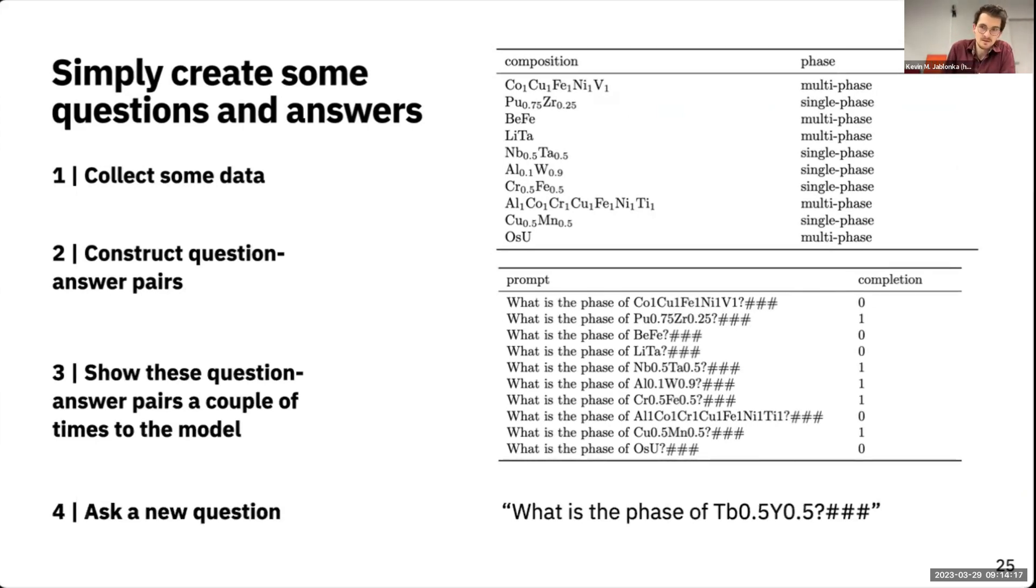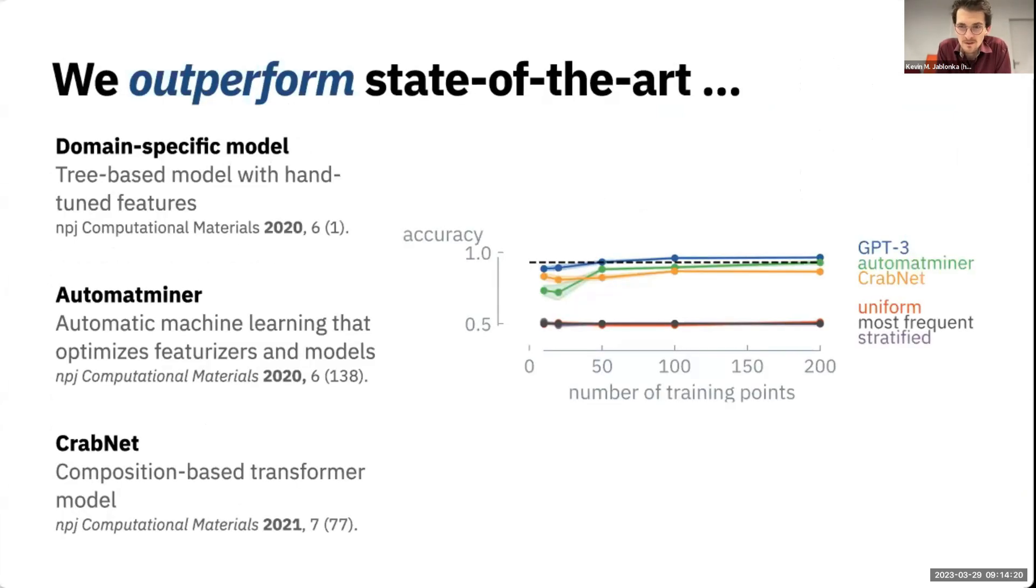The surprising thing for us was that this works quite well. You just take GPT-3 as it was trained by OpenAI, fine-tune with small datasets, and this outperforms all that has been known before. In this case you have the learning curve for those alloys. You have this dashed line, which was a model built by experts in this field with thousands of data points. You have some automated machine learning in yellow, and you also have CrabNet there. With just like 50 points, we beat this thousand-point specialized model with just this naive approach of fine-tuning GPT-3 on compositions.